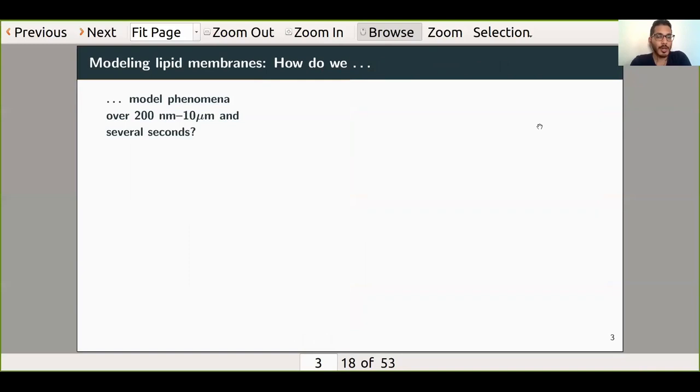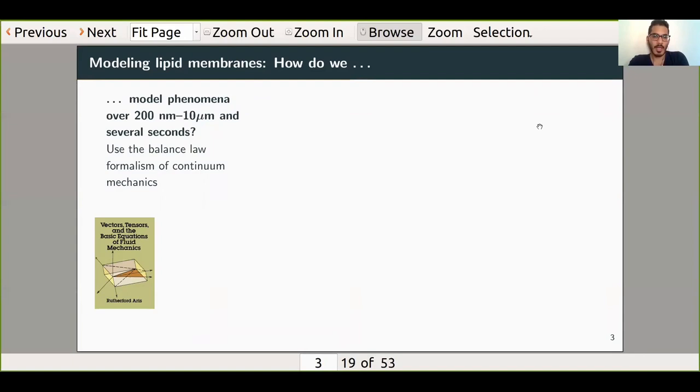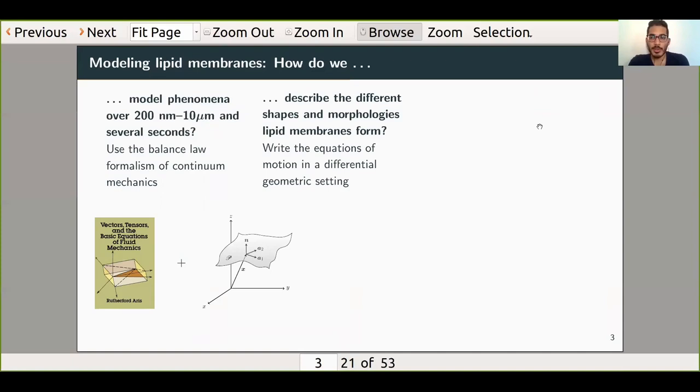We saw that these phenomena occur over hundreds of nanometers all the way up to tens of microns, and they occur over several seconds. So we can't use molecular dynamics methods to model them. What we're going to do instead is use a continuum perspective and balance laws. Additionally, we saw that the membrane can form all these kinds of different shapes and morphologies. We can't use a simple coordinate system like Cartesian, spherical, or cylindrical coordinates. Instead, we use the tools of differential geometry that essentially allow us to use coordinate systems for any arbitrarily curved surface.